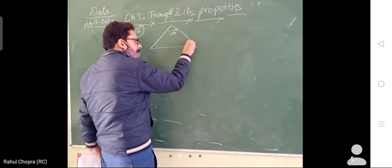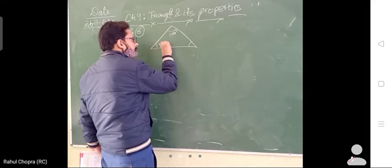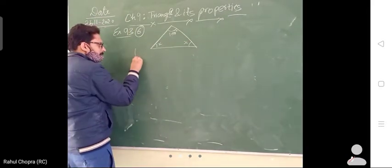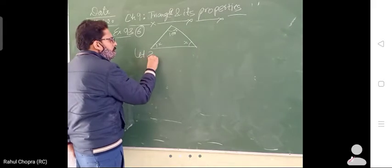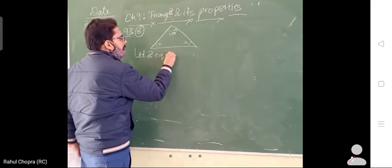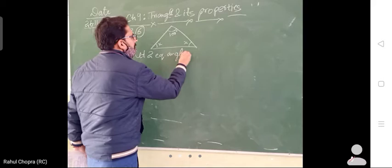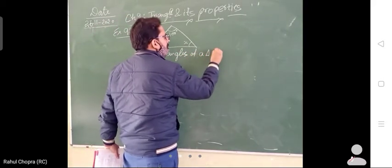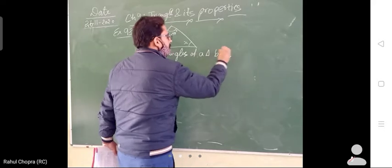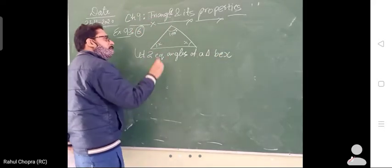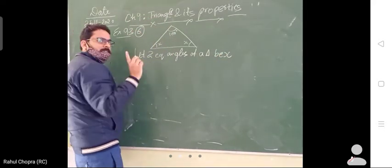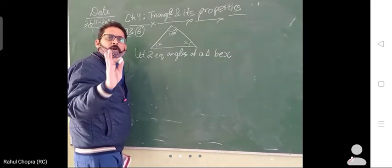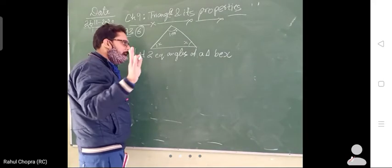The other two angles are equal, so we will suppose the equal angles as X. Let the two equal angles of our triangle be X. We will add all three angles, and the sum of all three interior angles of a triangle is 180 degrees, as per the angle sum property.